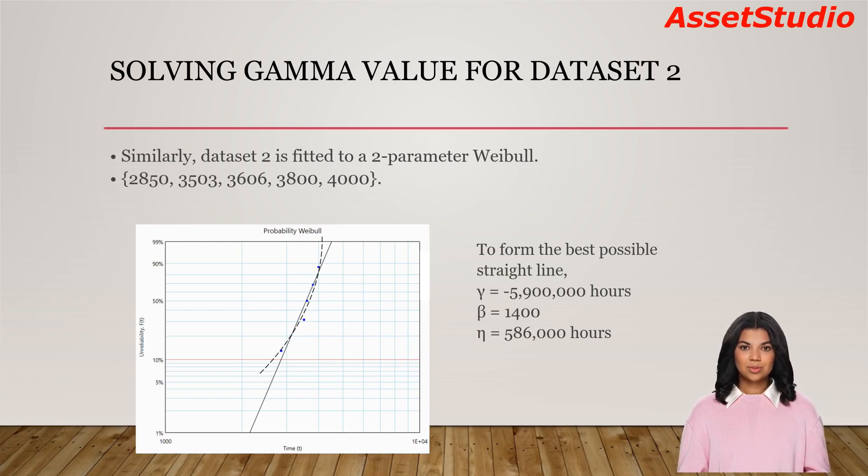To form the best possible straight line, the gamma value is about minus 5.9 million hours. We have a negative gamma. The beta is 1,400 and eta is 586,000. Now we have a beta value that is way beyond 50.